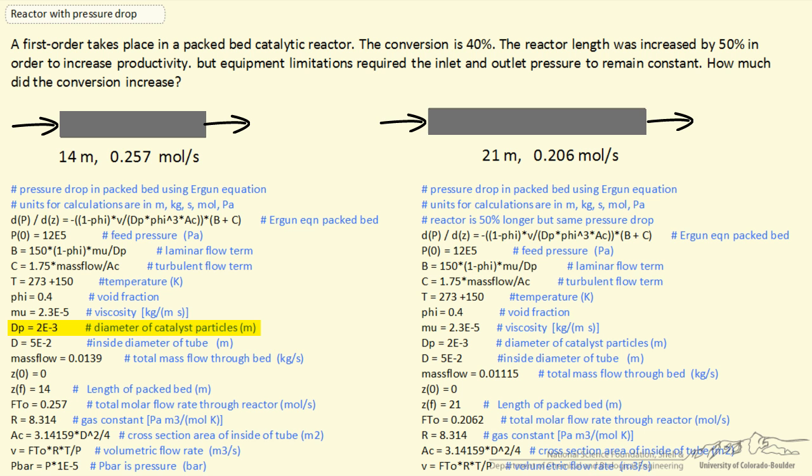The size of the particles are small, 2 times 10 to the minus 3 meters, and that causes significant pressure drop. And so I've picked values to give us 40% conversion.